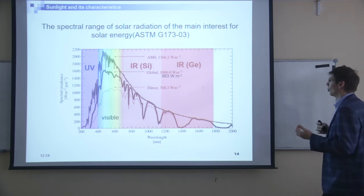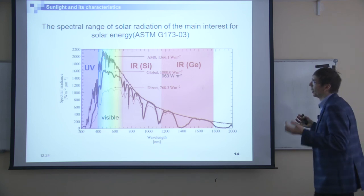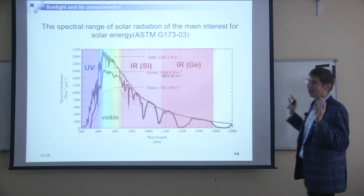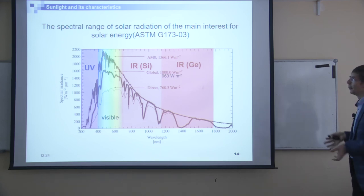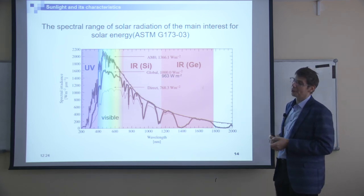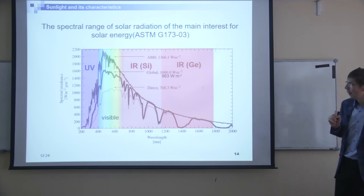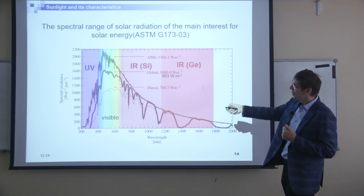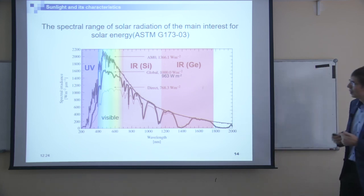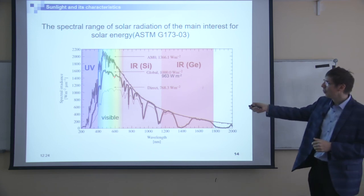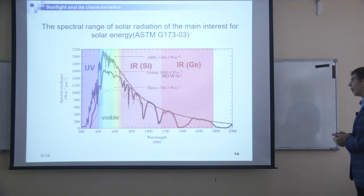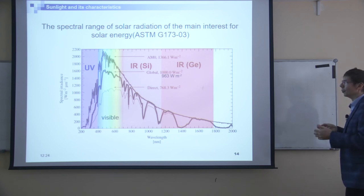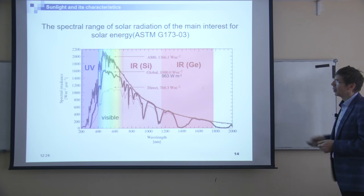To simplify the calculation, people decided there is no reason to use this complicated value and they would use a nicer value. It was decided that the standard condition intensity would be 1 kilowatt per square meter. If you do a precise calculation even for the global spectrum you have some deviation from 1 kW/m², but for the standard condition it was decided this is not a sufficient reason to use a more complex value.